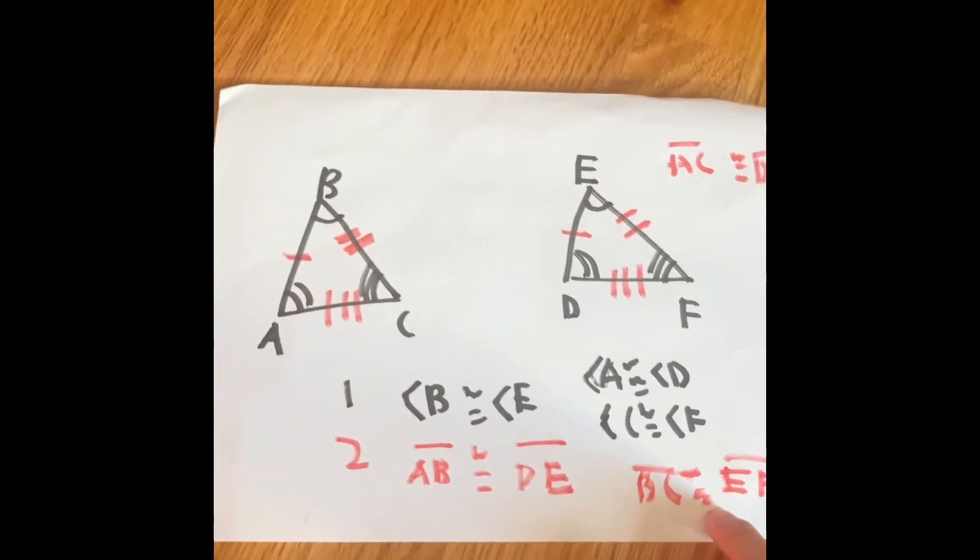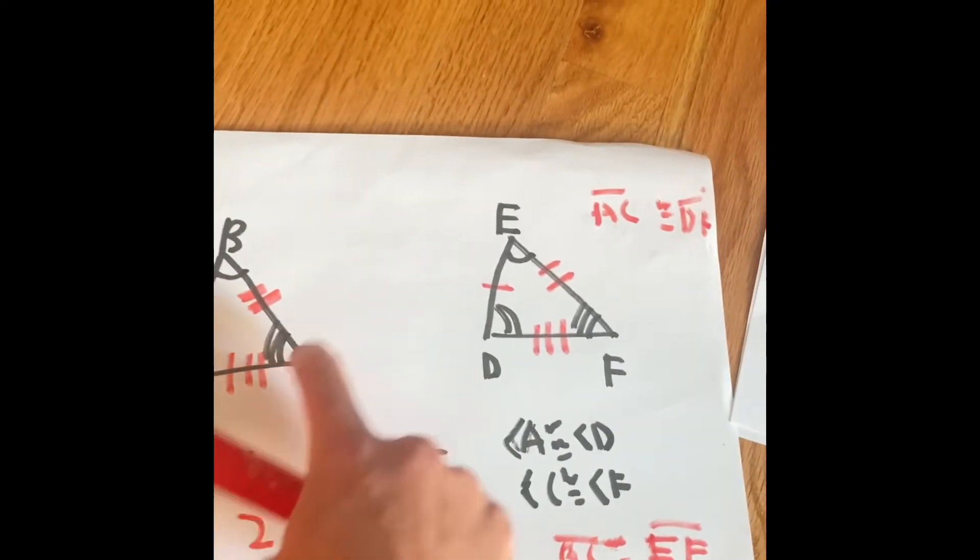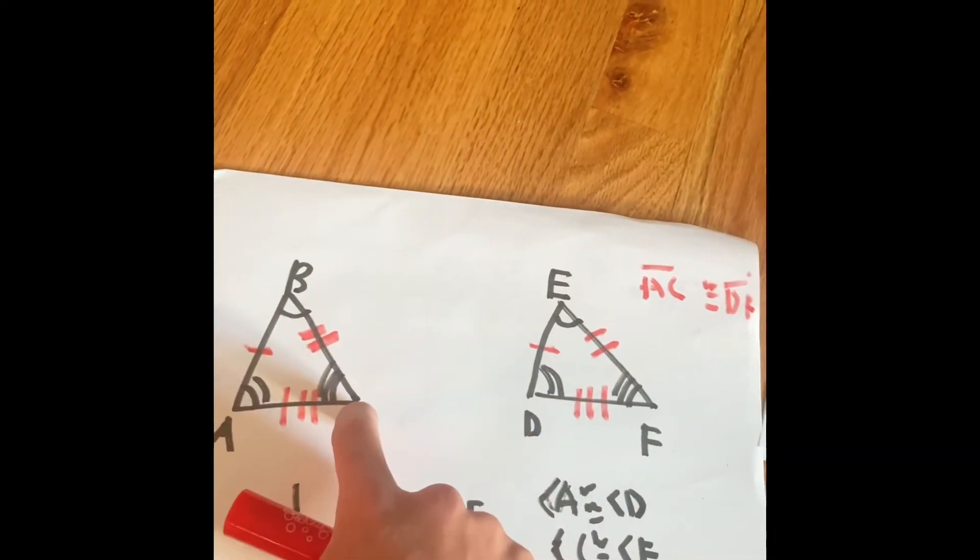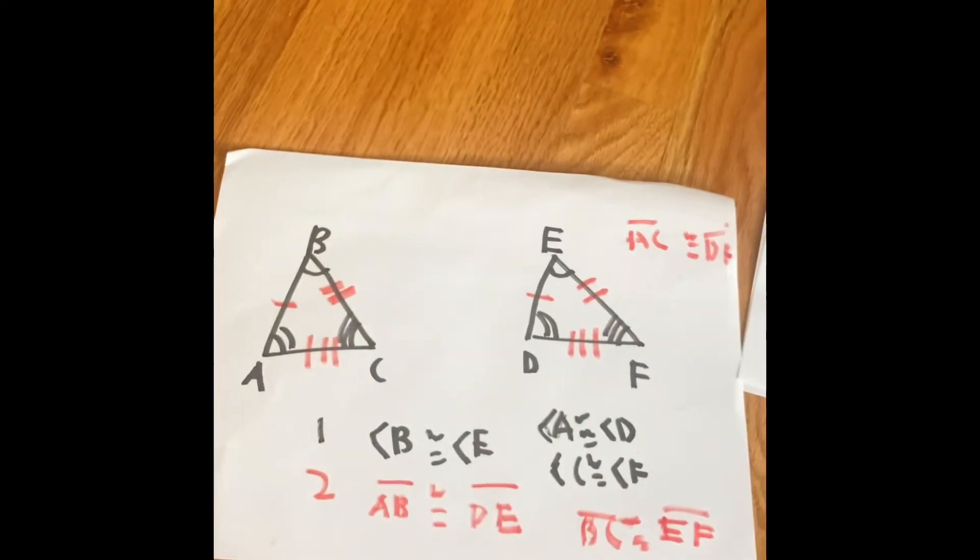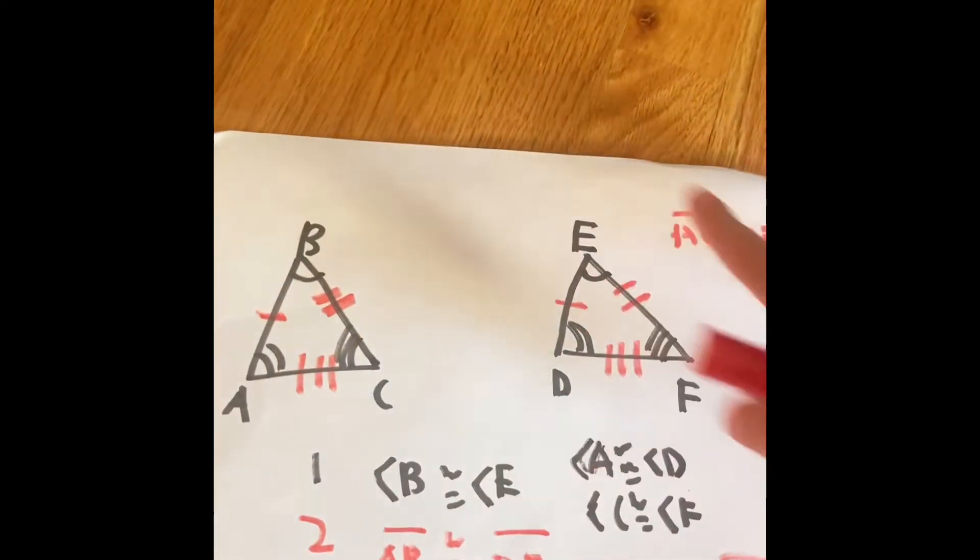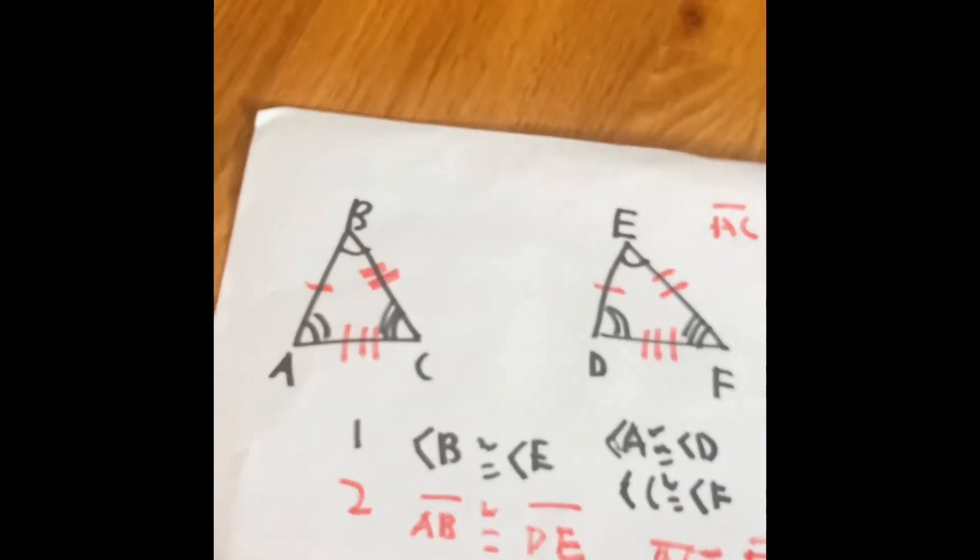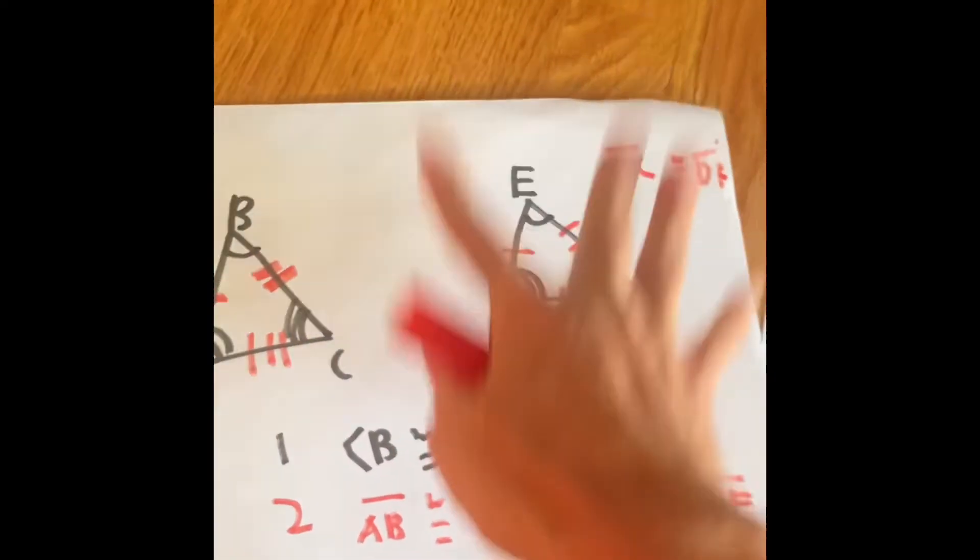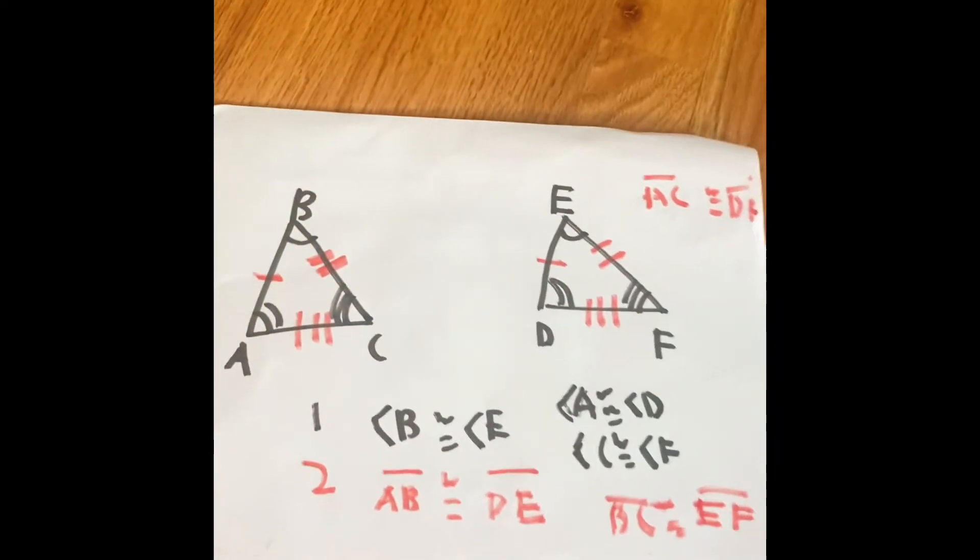So here's BC, EF, AC, DF. So these are the figures proving that these two triangles are congruent and the same. Shapes that are the same length, same angles, same lookalikes.